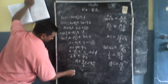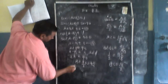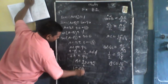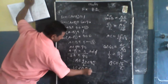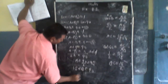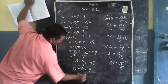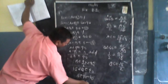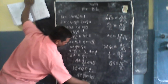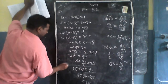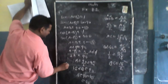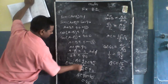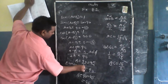A=45 रख देंगे equation 1 में: 45+B = 90, B = 45। A और B दोनों 45 आए।